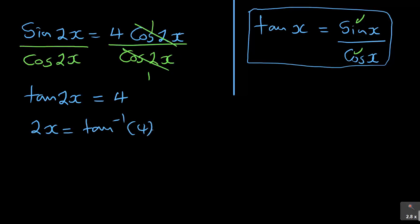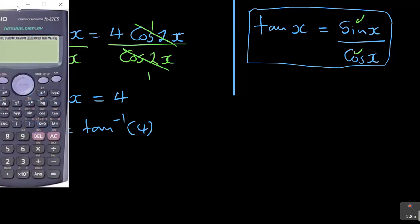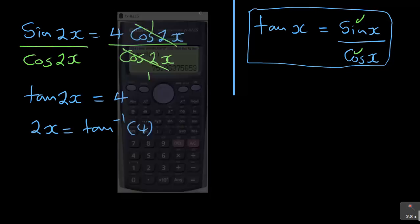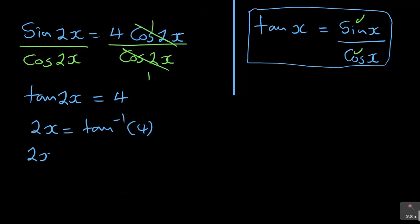So if I can find that arctan 4, it will be shift arctan 4. It will be 75.96 degrees. So 2x is equal to 75.96 degrees.